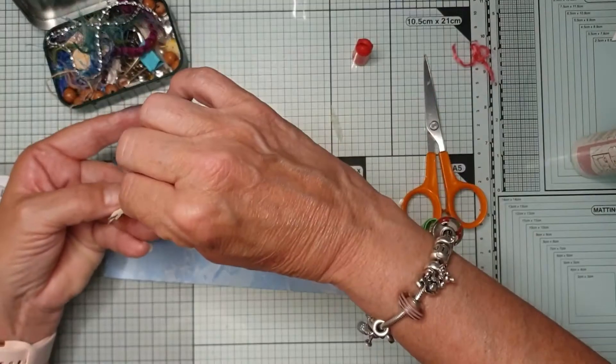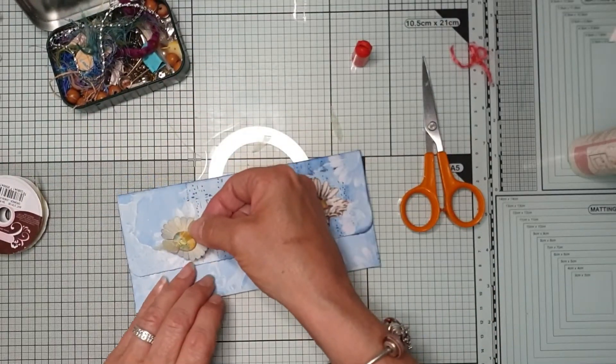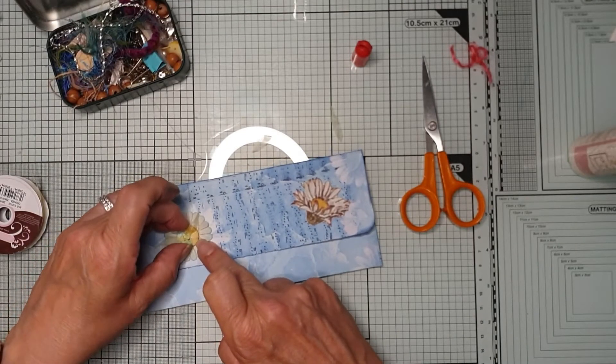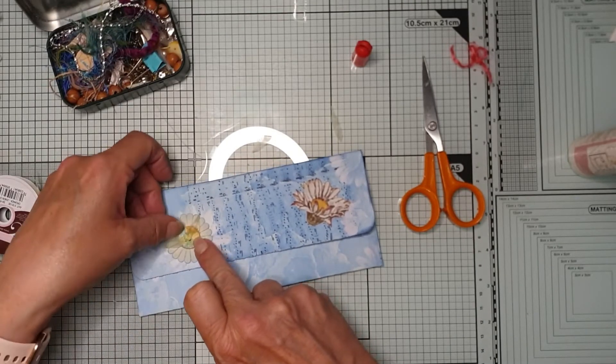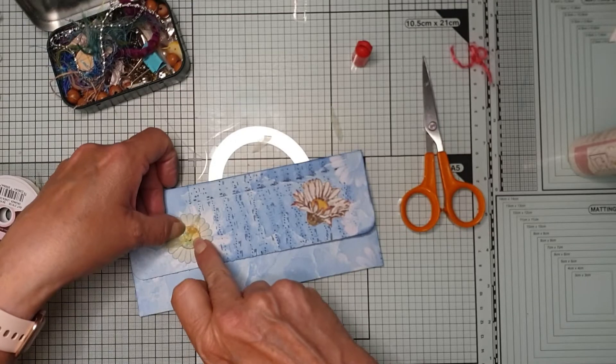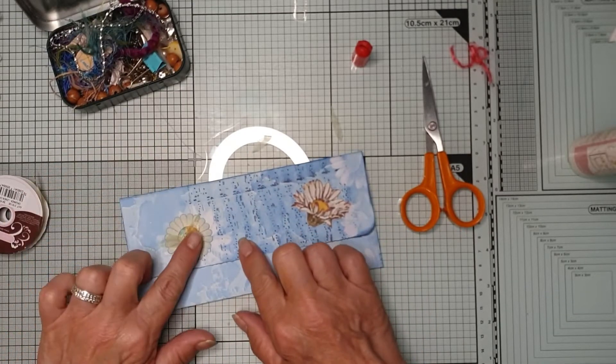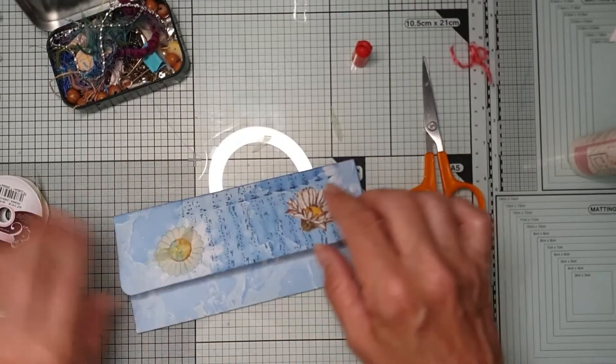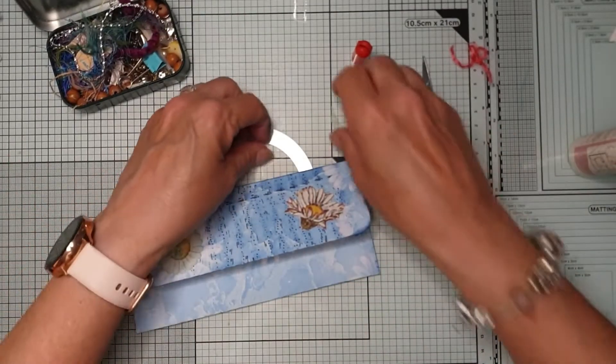And we'll put that one on there. All right. It's one thing with the Fabri-tac. You get a little bit of wiggle room. So you can move it about a bit. That back there.